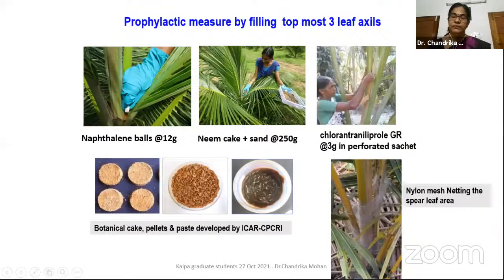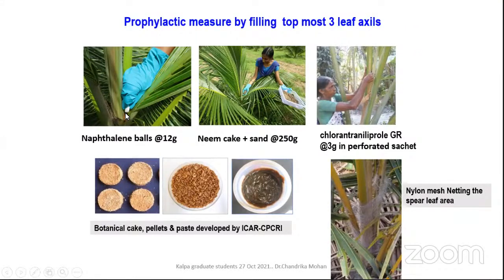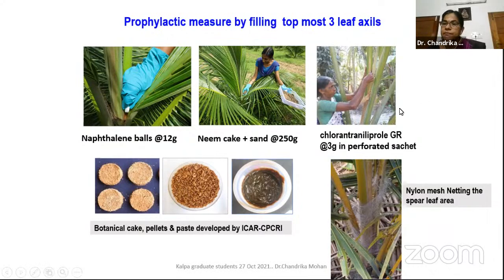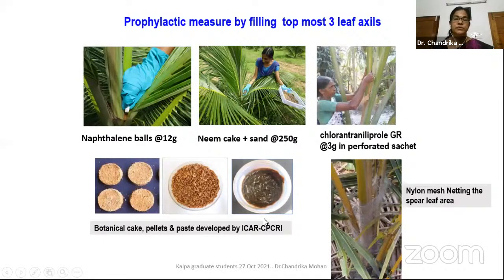Another strategy is prophylactic leaf axil filling. The axil of the frond is known as leaf axil. In the leaf axil, we put some kind of repellent. For very young seedlings, we can use naphthalene balls in the leaf axil covered with sand, or neem cake plus sand at the rate of 250 grams, or chlorantraniliprole granules in small 3-gram sachets inserted into the leaf axils. CPCRI has also developed botanical pellets and botanical paste formulations for leaf axil filling, which are very effective.